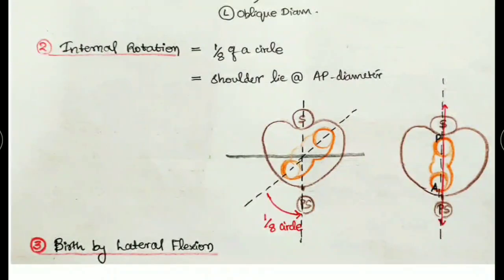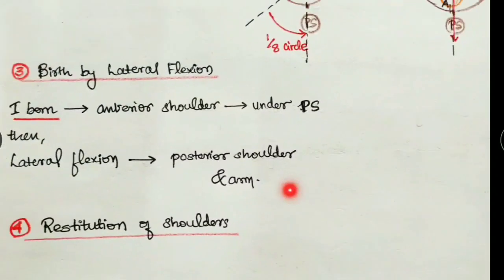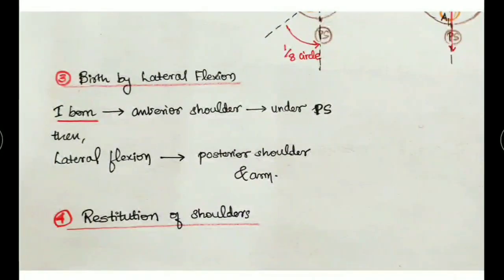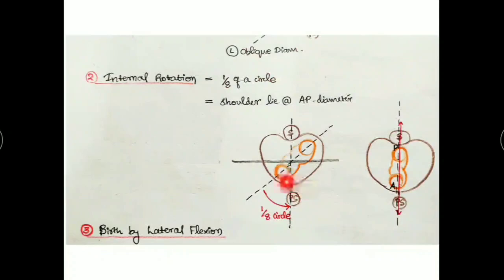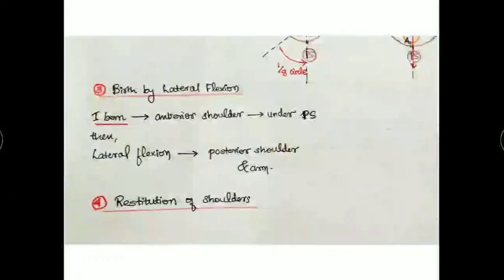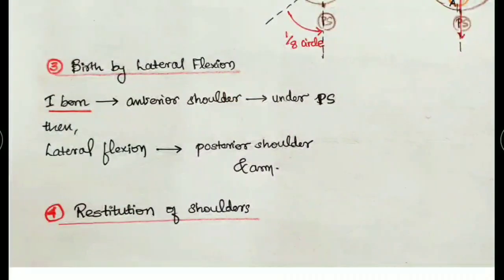After attaining the AP diameter position, next is lateral flexion - both upper limbs are delivered. First the anterior shoulder is delivered under the pubic symphysis, then by lateral flexion the posterior shoulder and arms are delivered. Then there is restitution: after internal rotation of the shoulders, after delivery outside the body it returns back one-eighth of the circle - that is restitution of the shoulder.